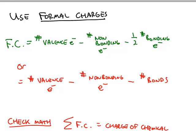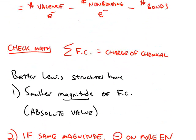And then you can either subtract half the bonding electrons, or you can just count the bonds. Remember, each bond is always made up of two electrons, so these formulas are equivalent.